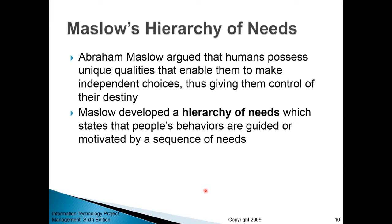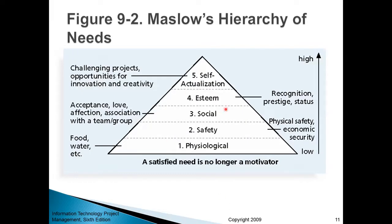When it comes to understanding human motivation, there's one central, famous model by Abraham Maslow — the Maslow Hierarchy of Needs. This model argues that humans possess unique qualities enabling them to make independent choices, giving them control of their destiny. On a more practical level, Maslow says there is a hierarchy of needs — an order among human needs — and people's behaviors are guided by the sequence of those needs.